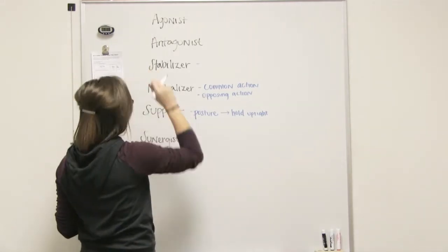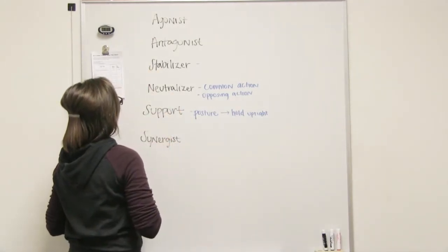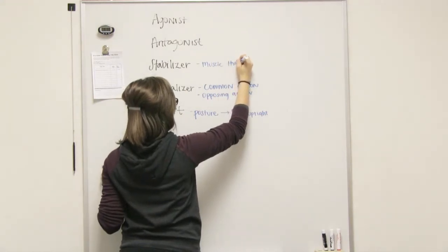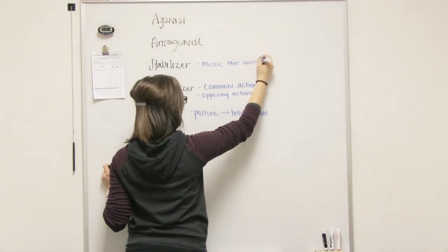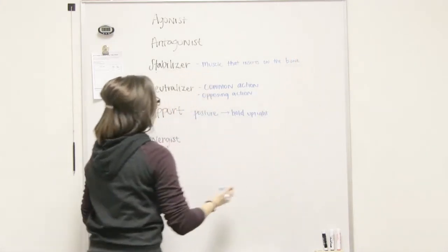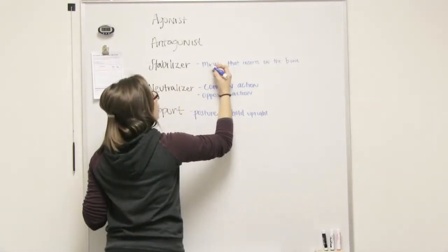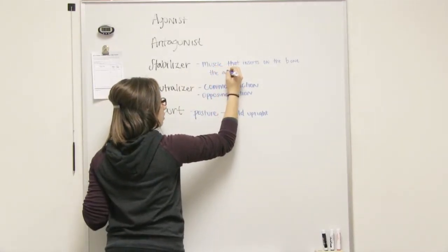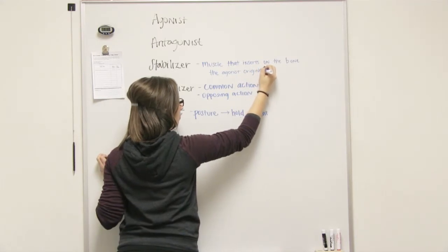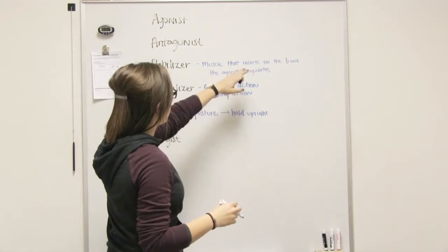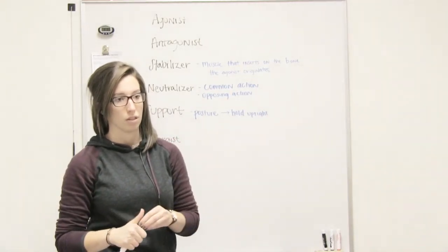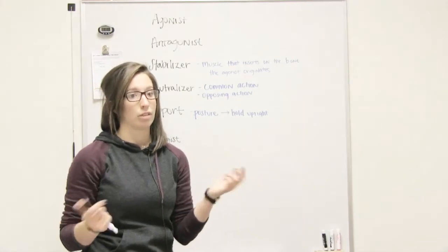And like you said, a stabilizer, I'm just going to probably rephrase it a little bit. So it's a muscle that inserts on the bone moving, or it's actually specifically the bone, the agonist. Because the agonist of the muscle causes and performs the movement, and the antagonist is the one resisting the movement, right?